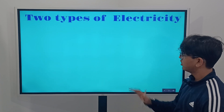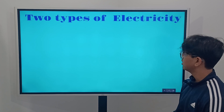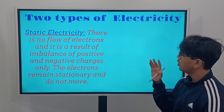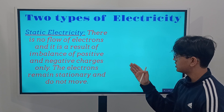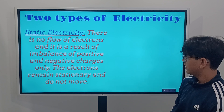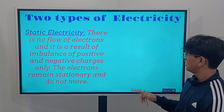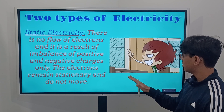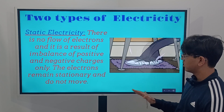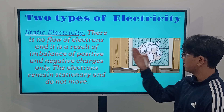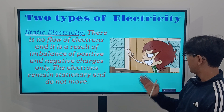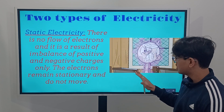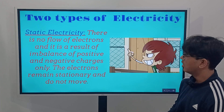Before covering the atomic model, we're going to go over two types of electricity. The first is static electricity. Static electricity means there is no flow of electrons — it is a result of an imbalance of positive and negatively charged particles only, and the electrons remain stationary and do not move. An example is when you shuffle your feet against a carpet: electrons from your body transfer onto the carpet and stay there, resulting in an imbalance where you become positively charged and the carpet becomes negatively charged.